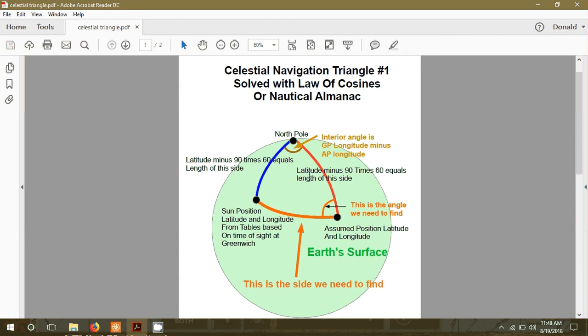On this triangle you know three parts. Your distance from the North Pole, a very simple calculation of your latitude minus 90 times 60 is your distance in miles. The same is true for the Sun. Its latitude minus 90 times 60 is its distance from the North Pole. Because you know both longitudes, you also know how many degrees the Sun has traveled from your longitude to its present longitude. That's the angle at the top of the triangle.